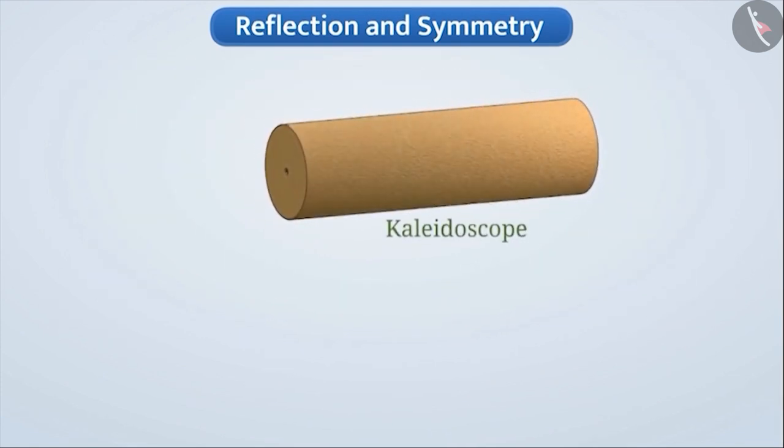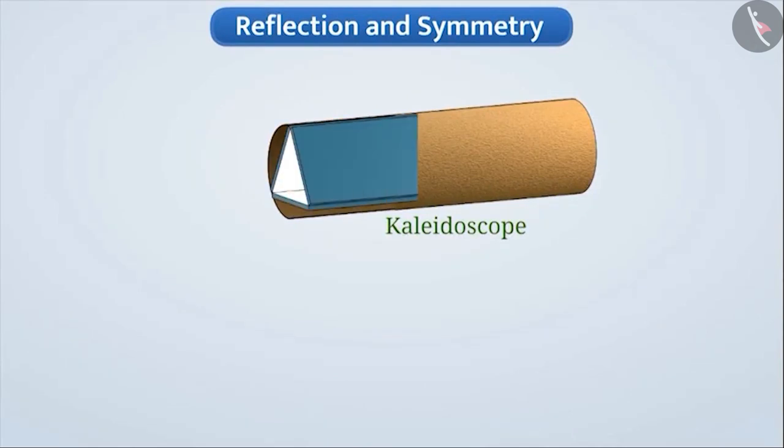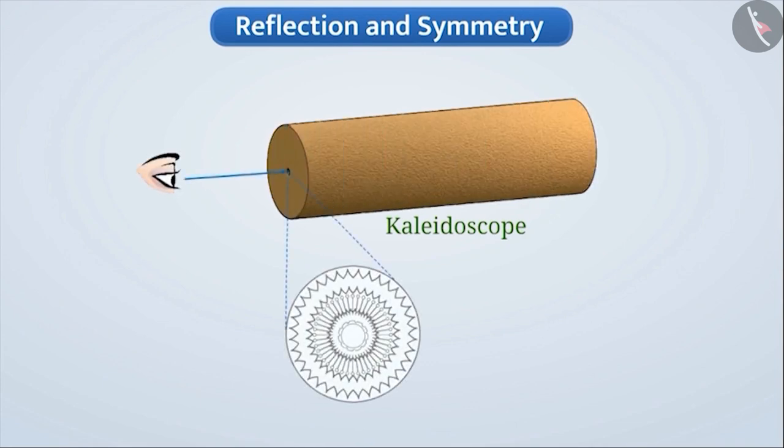Do you know what a kaleidoscope is? A kaleidoscope is an instrument made using three or more mirrors in which a variety of attractive patterns can be seen. Many reflections are formed by mirrors that have several lines of symmetry.